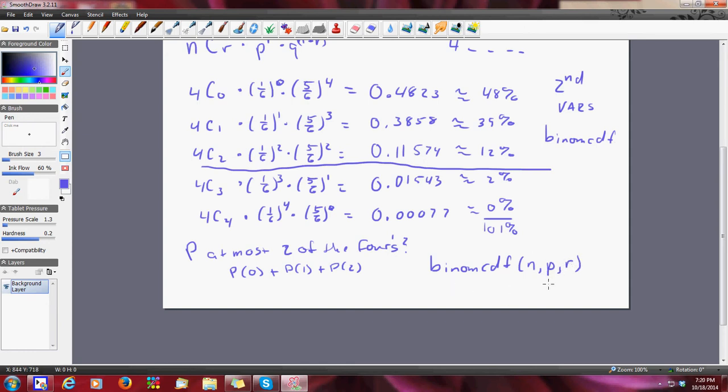So, I'm going to type in, I have binomial CDF, I'm not going to type in N, because my N is four, my P is one sixth, so four comma, and the comma's above the number seven, one sixth, comma, and then R, which is two. And when I press enter,